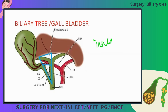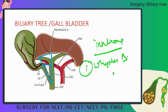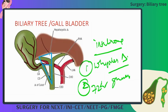For insulinoma, two points to remember. First, the patient will present with Whipple's triad — repeated episodes of hypoglycemia, and if you give glucose the patient will be alright again. Second, the diagnostic test is the 72-hour glucose test.